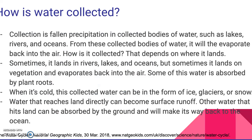How is water truly collected? Collection is fallen precipitation in collected bodies of water, such as lakes, rivers, and oceans. From these collected bodies of water, it will then evaporate back into the air.